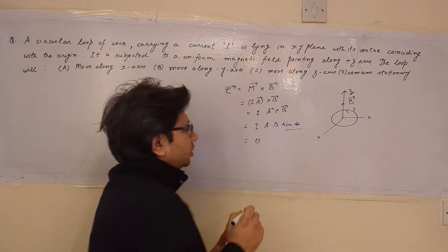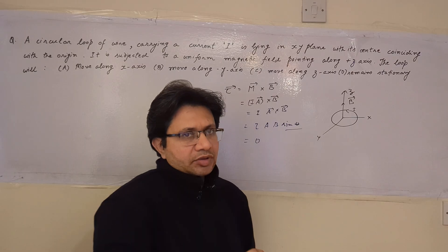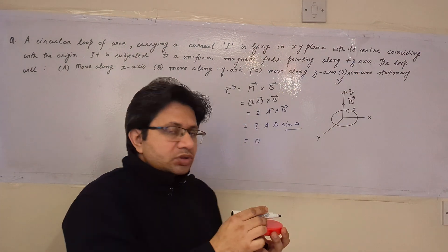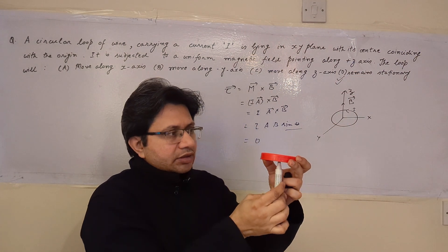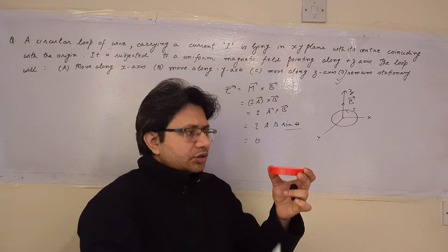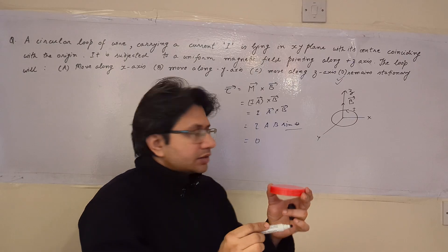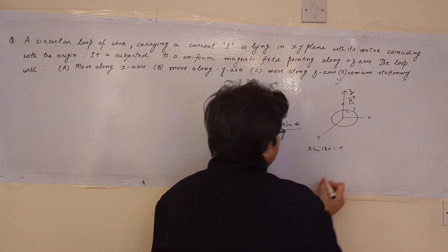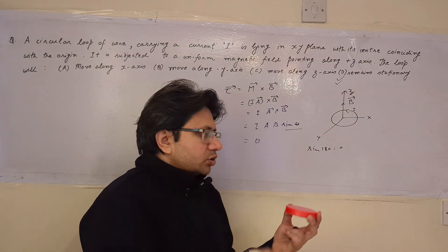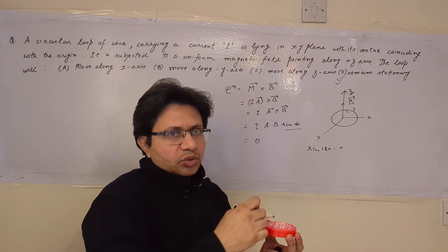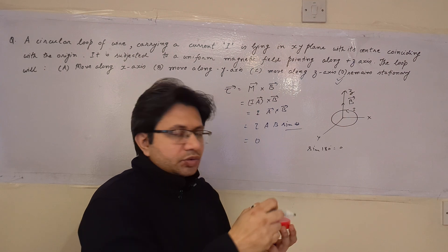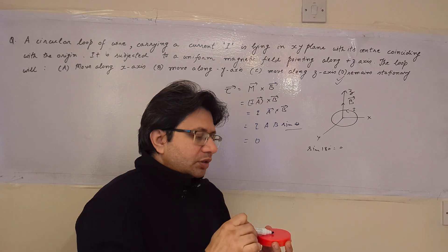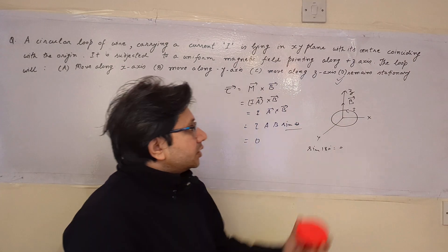So the torque becomes 0, and when the torque is 0, this loop remains stationary. Now suppose the current direction is such that the area vector points in the downward z-direction. The angle between downward z and plus z is 180°, and sin 180° is also 0. So in this case also the torque is 0. Whether the current is clockwise or anticlockwise, the torque acting on the loop is 0, and the loop remains stationary. Answer D is correct.